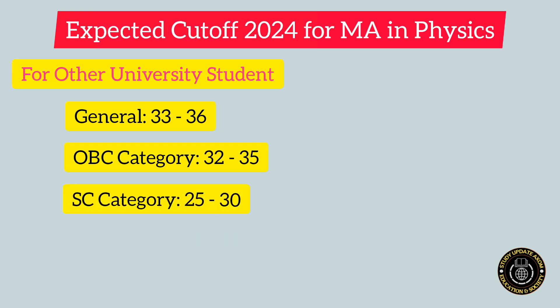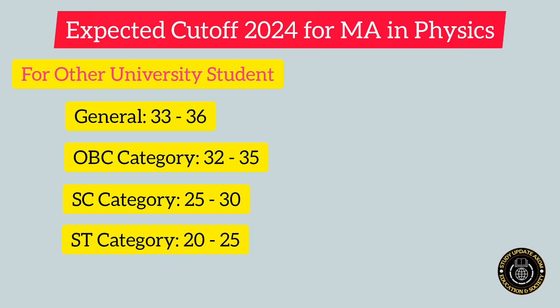For SC category students, the range may be in between 25 to 30. For ST category students, the cutoff may be in between 20 to 25. For students belonging to the EWS category, the expected cutoff may be in between 22 to 25.